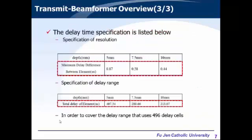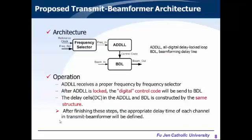We can transform a delay table to a multiple-integer delay in MATLAB before designing the transmitted beamforming. Our proposal includes three main blocks: Frequency Selector, All-Digital Delay-Locked Loop (ADDL), and Beamforming Delay Line. First, ADDL receives a proper frequency from the Frequency Selector. After the ADDL is locked, it generates a digital control code to the beamforming delay line. The delay in the beamforming delay line is then determined because the delay cells in the beamforming delay line and ADDL share the same structure. As a result, the delay of the transmitted beamforming can be determined.